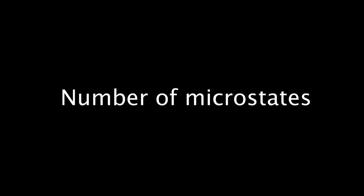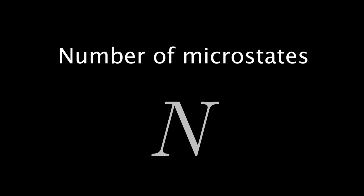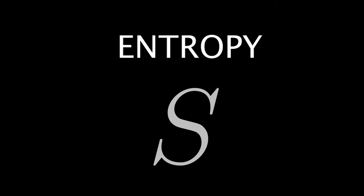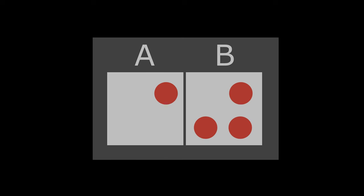Let us denote the number of possible microstates of a system by n. Now we can understand entropy. Entropy is a measure of the number of possible microstates. The more states the system can occupy, the higher its entropy.